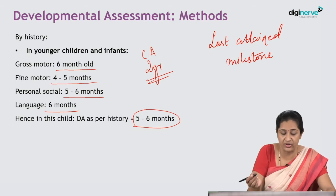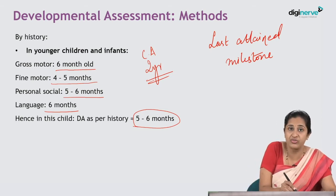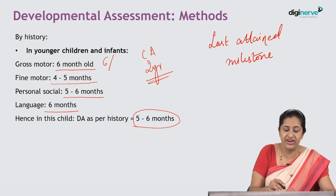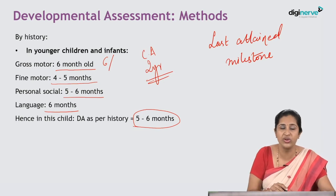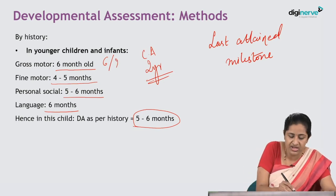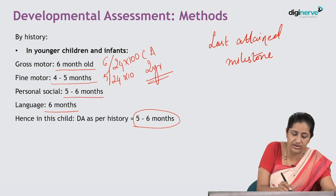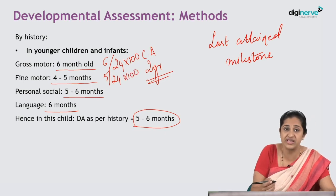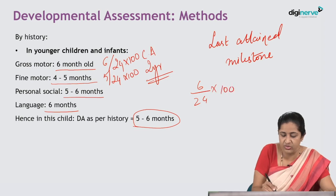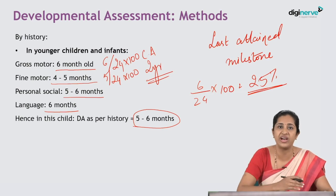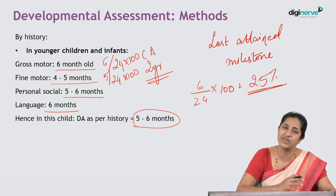If you want to calculate the developmental quotient, in gross motor it will be six months divided by the chronological age — two years, which is 24 months — into 100. Similarly, for fine motor it will be five months divided by 24 into 100. So if we say six months, it will be six divided by 24 into 100, equal to 25 percent. Since 25 percent is far less than 70 percent, this child has global developmental delay.